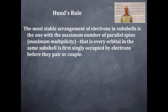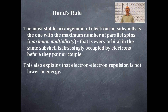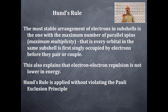This is our definition of Hund's rule: the most stable arrangement of electrons in subshells is the one with the maximum number of parallel spins — that's called maximum multiplicity. Every orbital in the same subshell is first singly occupied by electrons before they pair or couple. This also explains that electron-electron repulsion is not lower in energy. Hund's rule is applied without violating the Pauli exclusion principle.